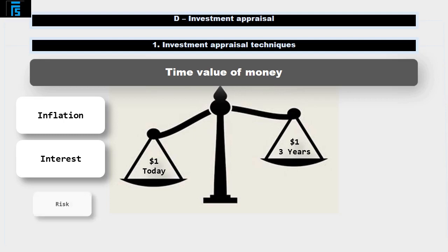Finally, risk. A dollar today is a definite dollar, whereas the promise of a dollar in three years time is never going to be quite as certain. This is sometimes known as the bird in hand principle, from the old expression: a bird in the hand is worth two in the bush.